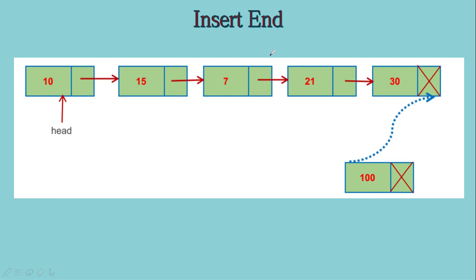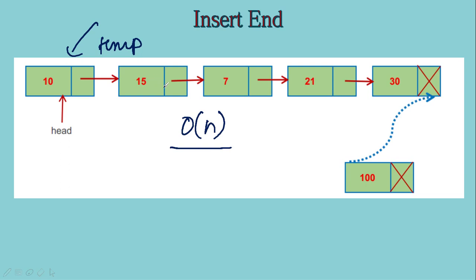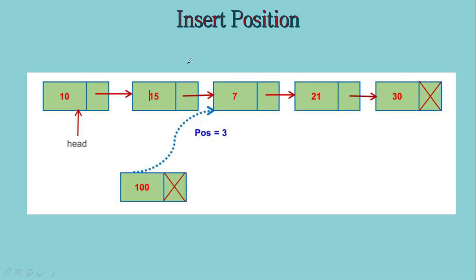Next is the insert at end operation — I have to add the new node to the end of the list. What we were doing: we have a temporary pointer and move it till the last node, then make the connection. The time taken will depend on the number of nodes. If it takes one second to move from one node to the next: five nodes takes five seconds, 50 nodes takes 50 seconds, 500 nodes takes 500 seconds. So the time taken depends on the number of nodes in the linked list — it is going to be big O of N.